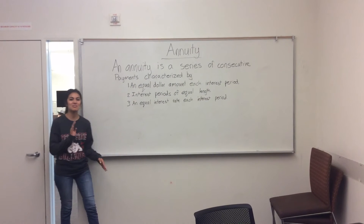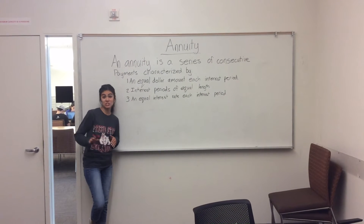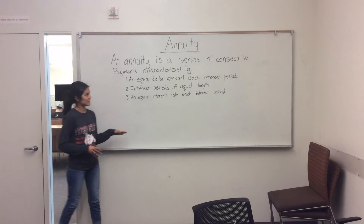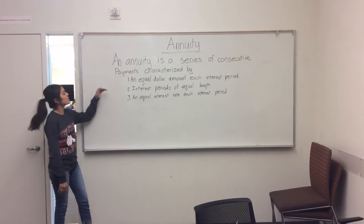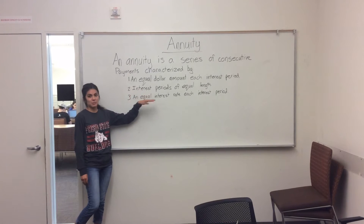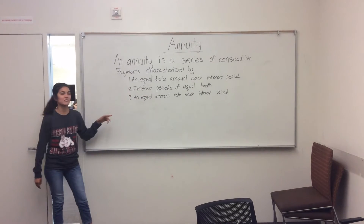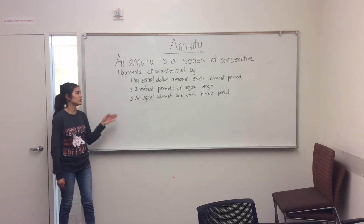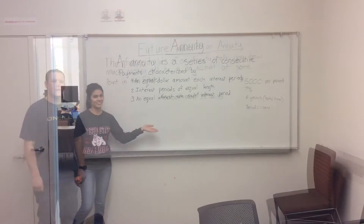Before we move on to the next section, it's important to know what an annuity is. It's a series of consecutive payments characterized by three things: an equal dollar amount each interest period, interest periods of equal length, and an equal interest rate each interest period.